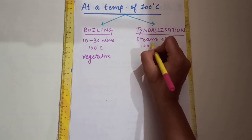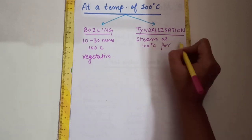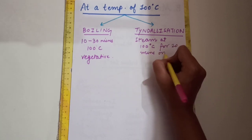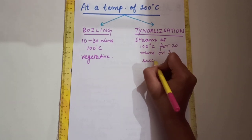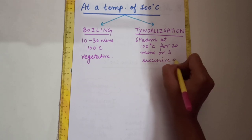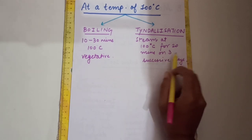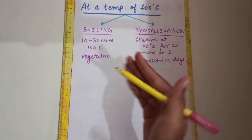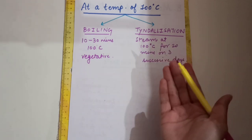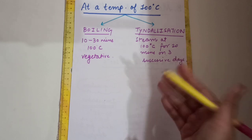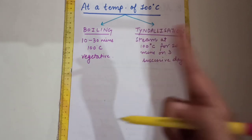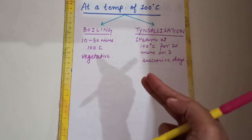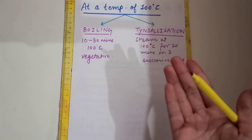Next is tyndallization. In tyndallization, we provide steam at 100 degrees Celsius for 20 minutes on 3 successive days. The reason for 3 successive days is that the first heat exposure kills vegetative forms, and in the interval between the first and second heating, the remaining dormant spores germinate into vegetative forms.